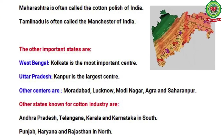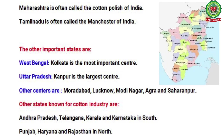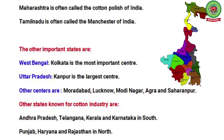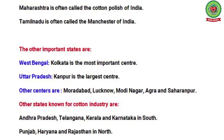Maharashtra is often called the Cotton Police of India. Tamil Nadu is often called the Manchester of India. Other important states include West Bengal, where Kolkata is the most important center; Uttar Pradesh, where Kanpur is the largest center with other centers at Muradabad, Lucknow, Modinagar, Agra, and Saharanpur. Other states known for cotton industries are Andhra Pradesh, Telangana, Kerala, Karnataka in the south, and Punjab, Haryana, and Rajasthan in the north.